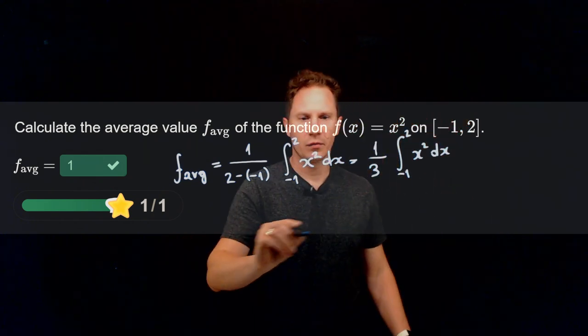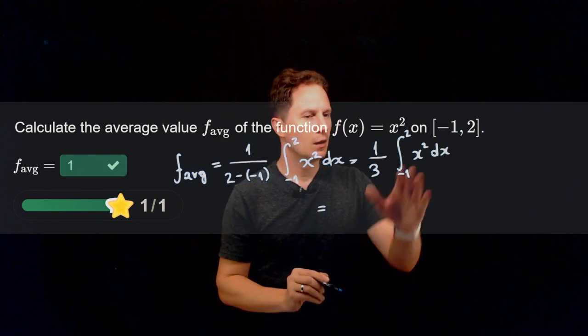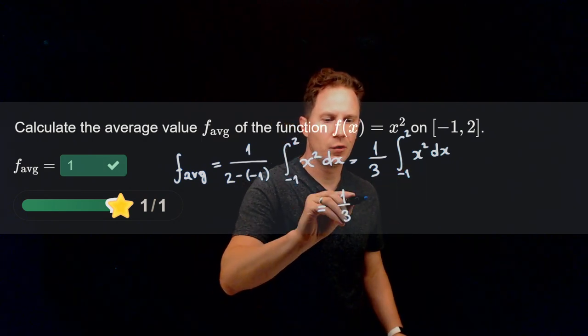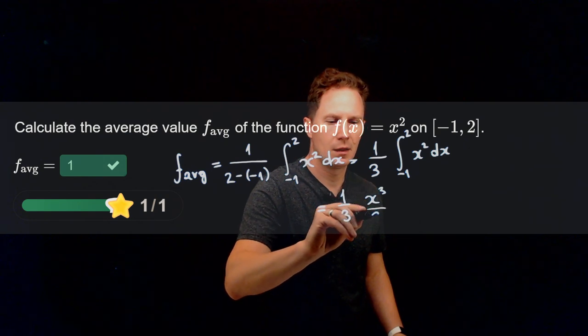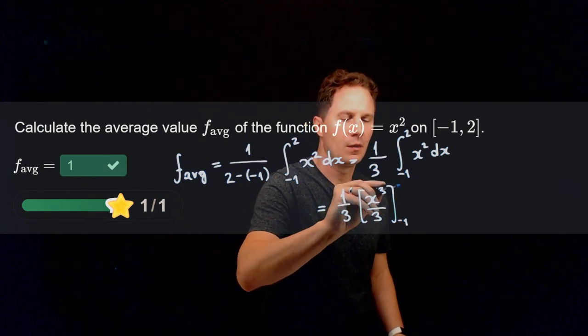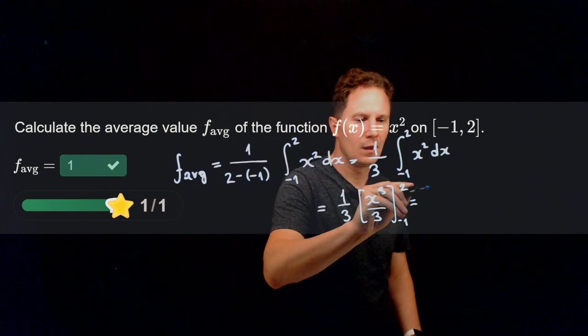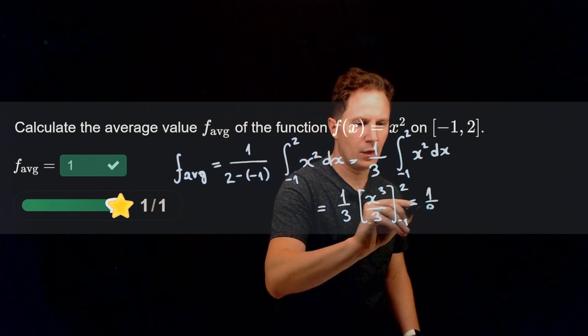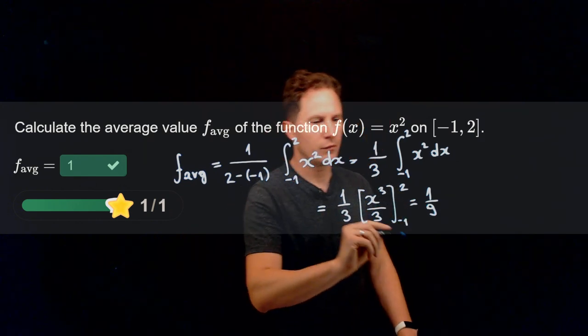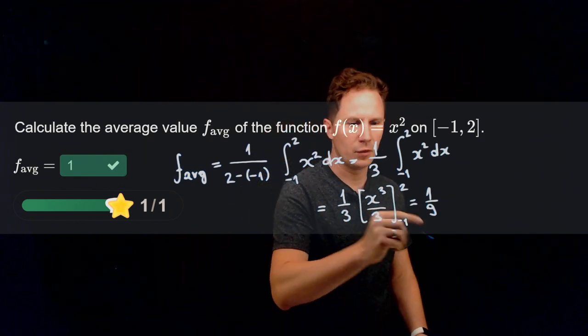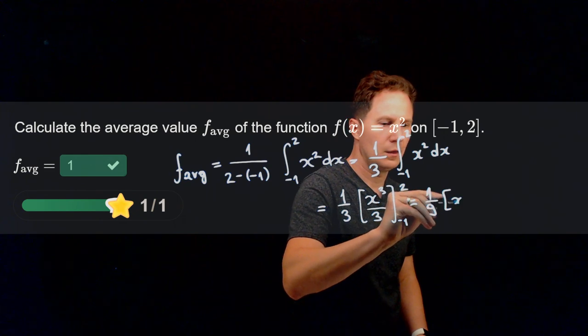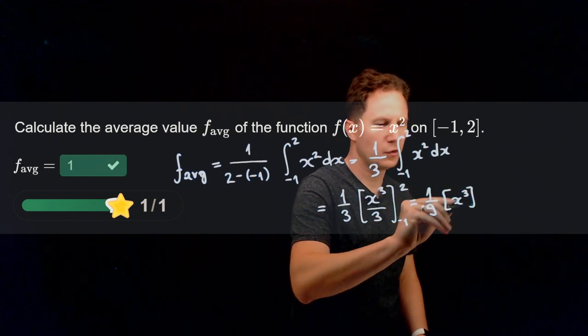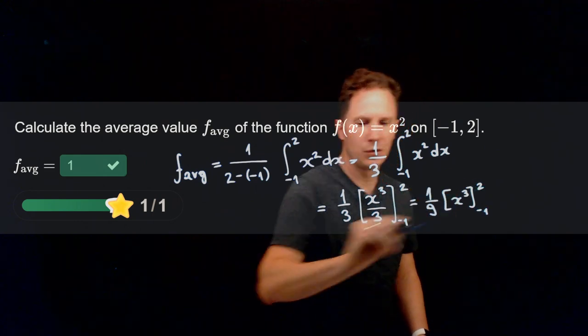An antiderivative for that function is x cubed over 3, and its change from negative 1 to 2 is, well, the factor of a third I can factor out, and then I have 1 over 9 times the net change of x cubed as x goes from negative 1 to 2.